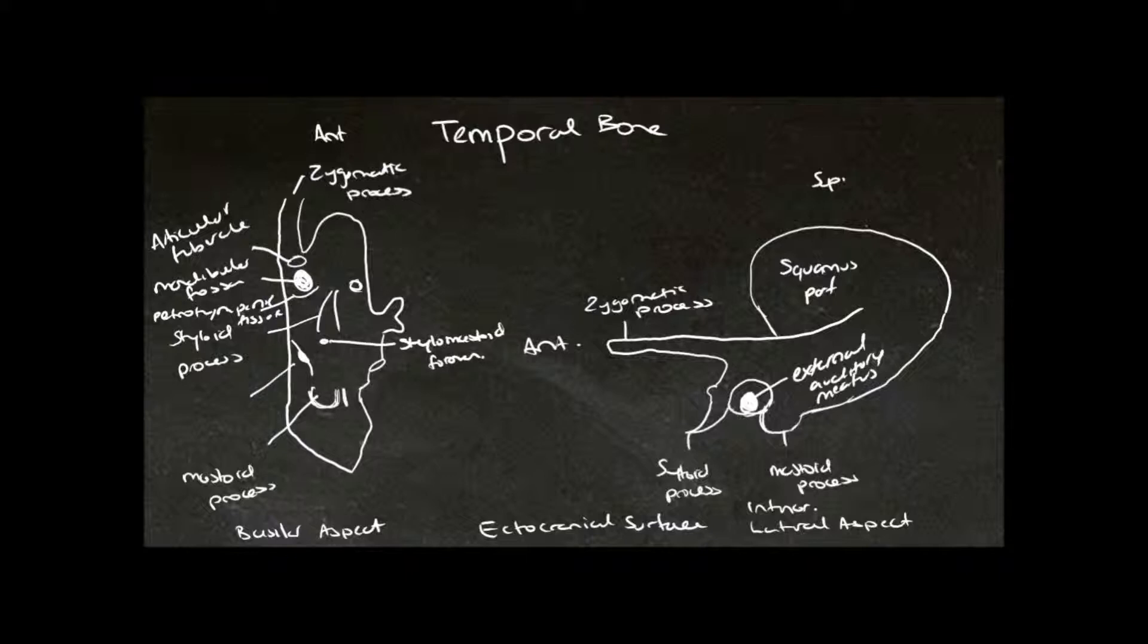Here we have our external auditory meatus, then our mastoid process. And medial to the mastoid process we have the mastoid notch, and this is for the attachment of the posterior belly of the digastric muscle.